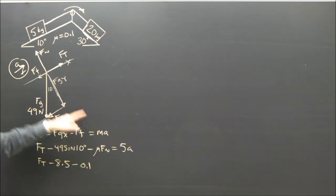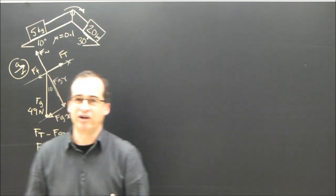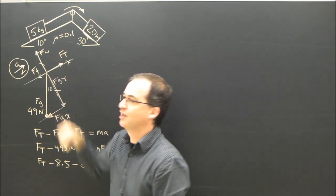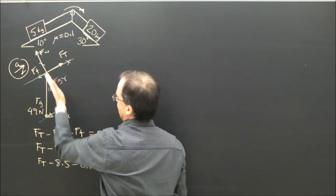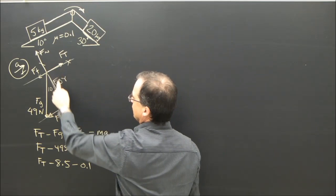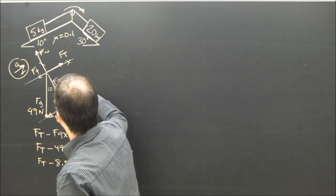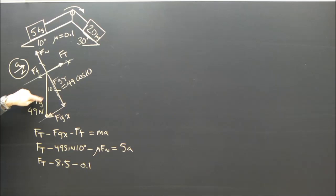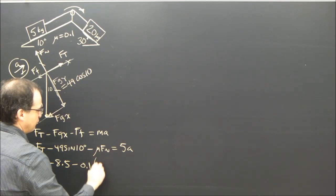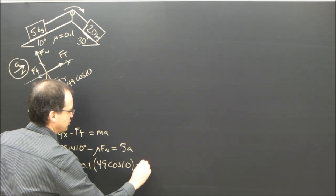And how am I going to get fn? fn is in the y direction. And if I look at the y direction, it's not accelerating in the y direction. So in the y direction it should be 0. This and this must be the same. fn is equal to fgy because it's accelerating this way. There's no acceleration in that direction. And those are the only two forces. So I'm going to substitute for fn. I'm going to substitute fgy. And what is fgy? fgy is 49 cosine 10 degrees. Because this is 49. This is the adjacent side. 49 cos 10. So I'm going to put in here. For fn, 49 cosine 10 degrees equals 5a.